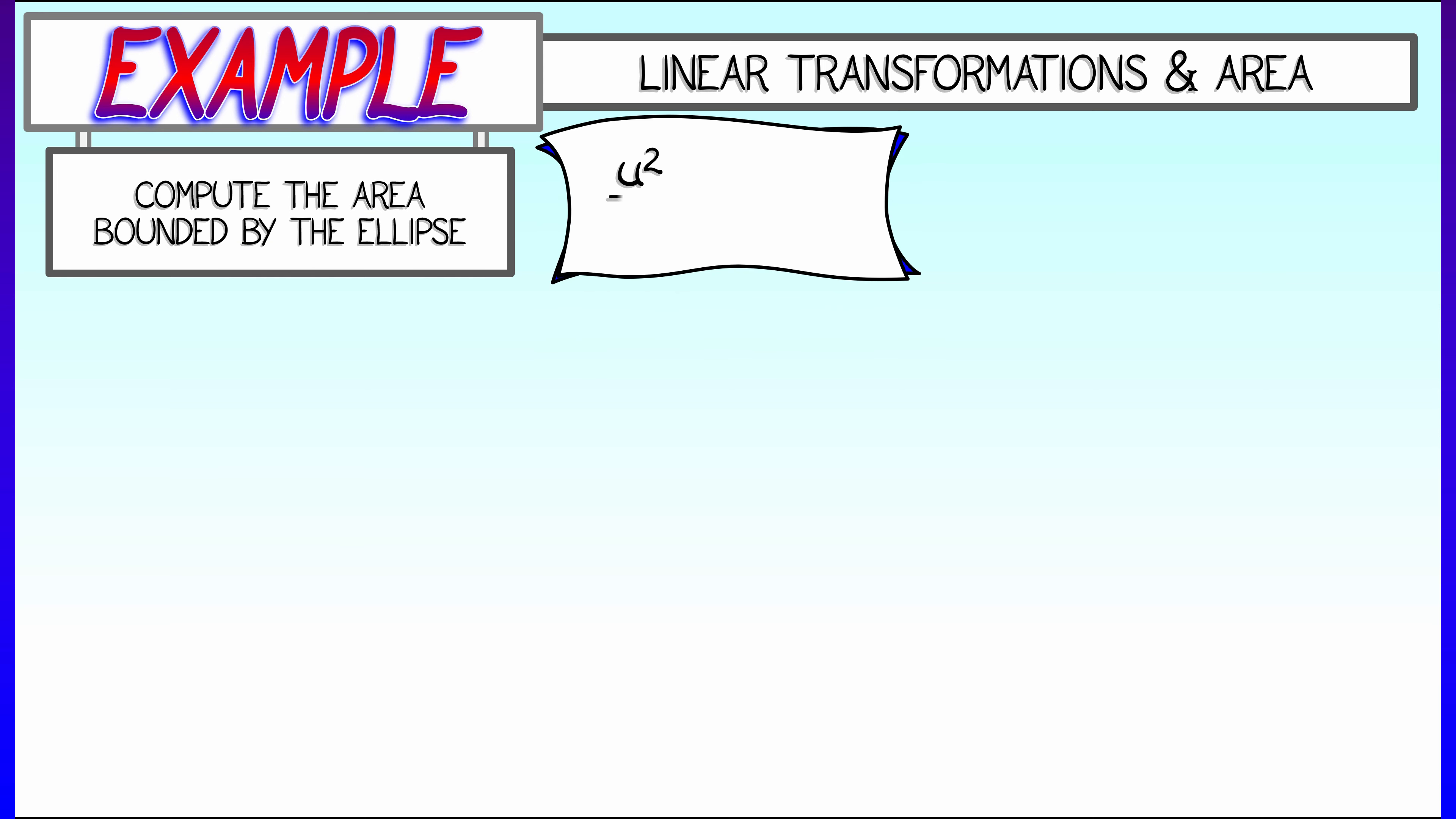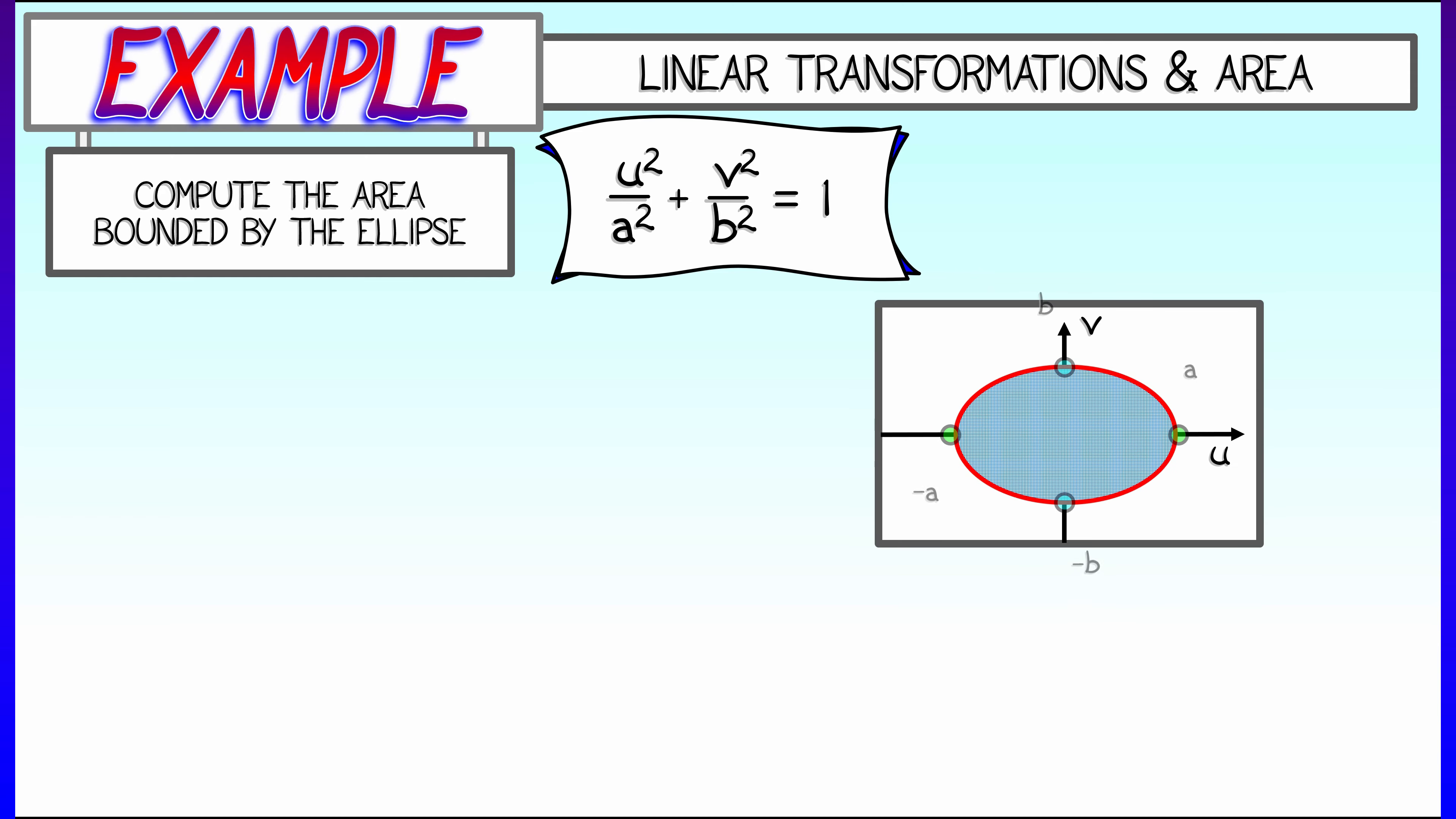Here's an example that you might have seen a formula for before. Let's say that you want to compute the area that is bounded by an ellipse. You're in the plane, you've got u-v-coordinates, and you look at u-squared over a-squared plus v-squared over b-squared equals one. That's an ellipse with semi-axes a and b.